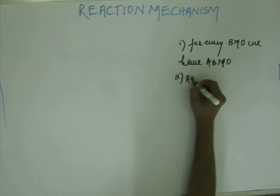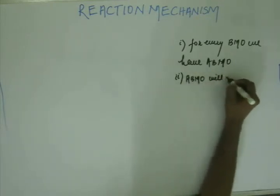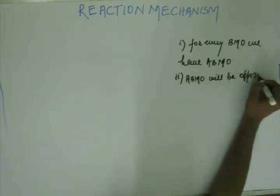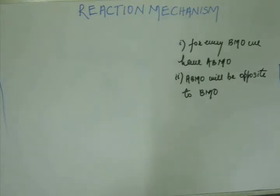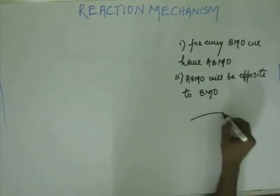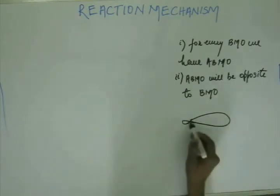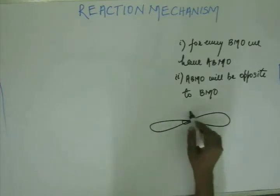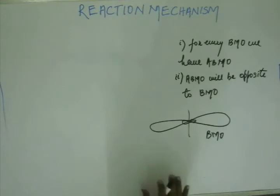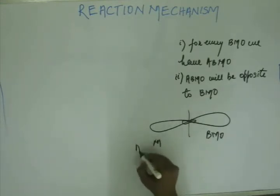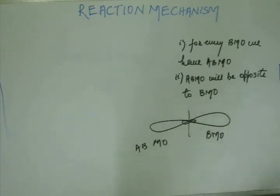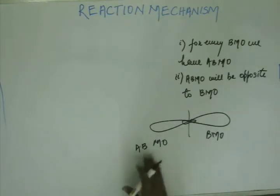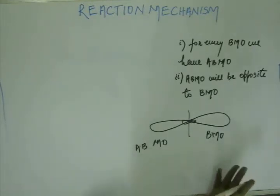The anti-bonding molecular orbital will be opposite to the bonding molecular orbital in their orientation in space. If you have a hybridized bonding molecular orbital oriented in one direction, then just opposite to it you will have an anti-bonding molecular orbital. So if it is a bonding molecular orbital, the anti-bonding molecular orbital will be stationed just opposite to it. This is very important to understand the further mechanism we are going to see.